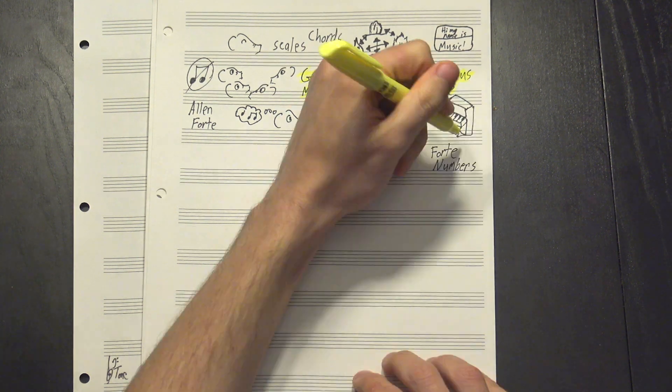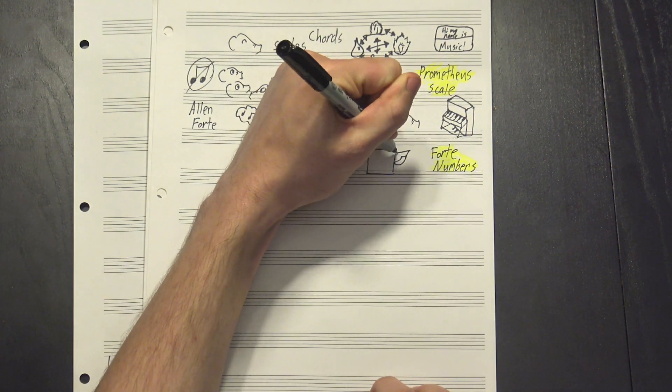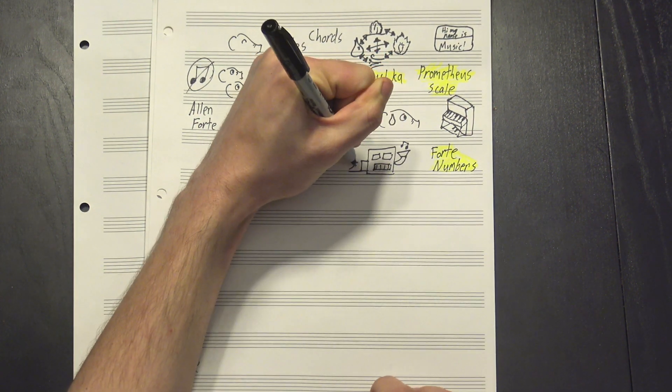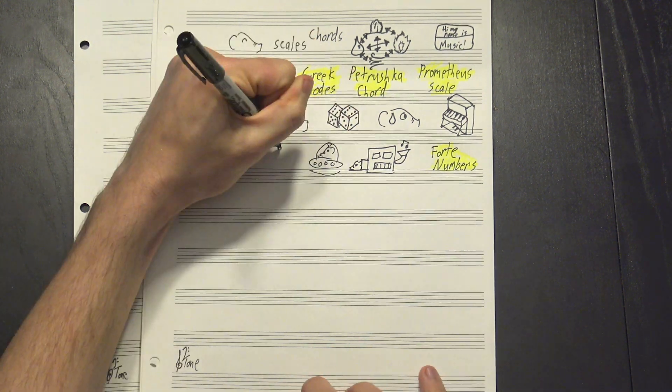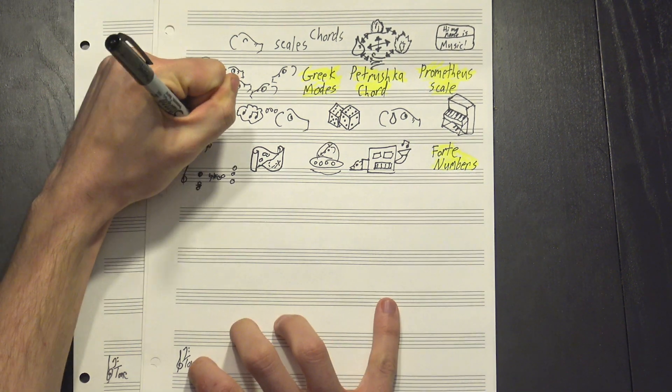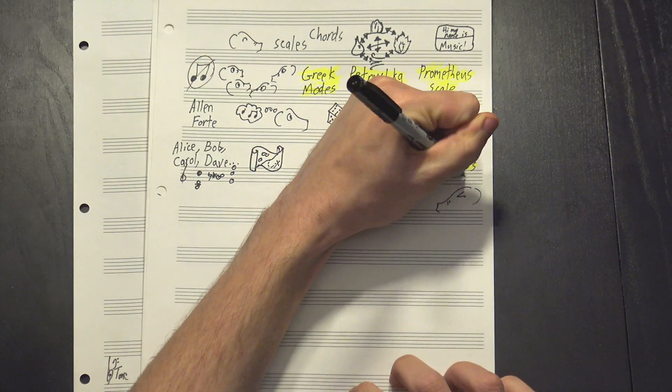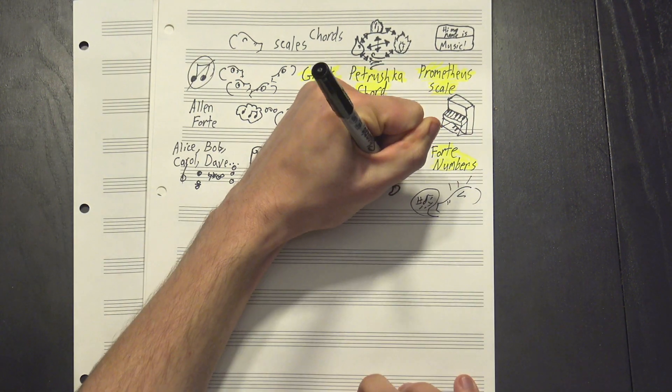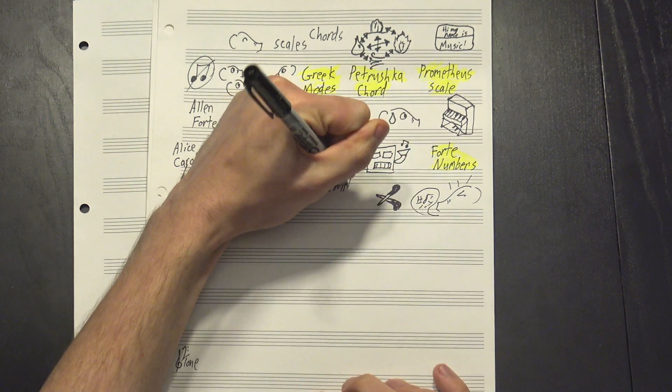With what are fittingly called Forte numbers, these were an attempt to systematically name every possible collection of notes, so that even if we'd never encountered something before, we could quickly and clearly identify it. But with so many possibilities, naming each one individually would probably be more cumbersome than it was helpful, so first we need to trim the list a bit by grouping similar things together.